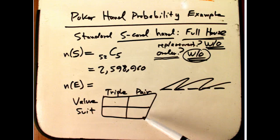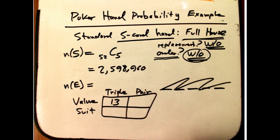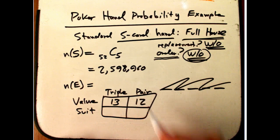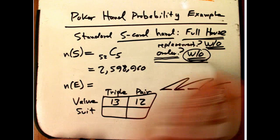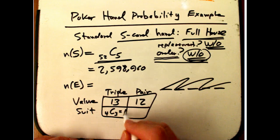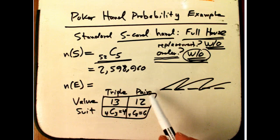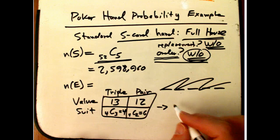The value for the triple: 13 possibilities — anything from two through ace. The value for the pair: once the triple's value is chosen, it can be anything else, so that's 12. The suits for the triple: I have four suits, choose three, order doesn't matter — that's 4C3, which equals 4. And the suits for the pair: 4C2, which equals 6, since I'm choosing any two suits out of four for the pair. The product of all those is 13 × 12 × 4 × 6 = 3,744.